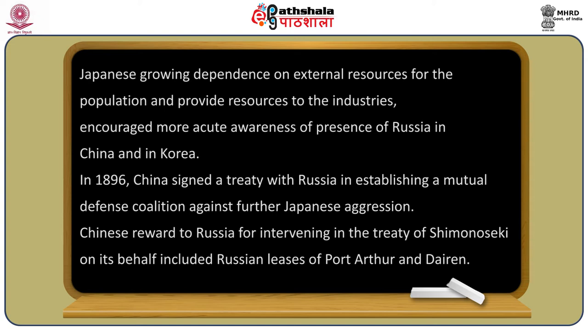In 1896, China signed a treaty with Russia establishing a mutual defense coalition against further Japanese aggression in the region. China's reward to Russia for intervening on its behalf in the Treaty of Shimonoseki included Russian leases of Port Arthur and Dalian.